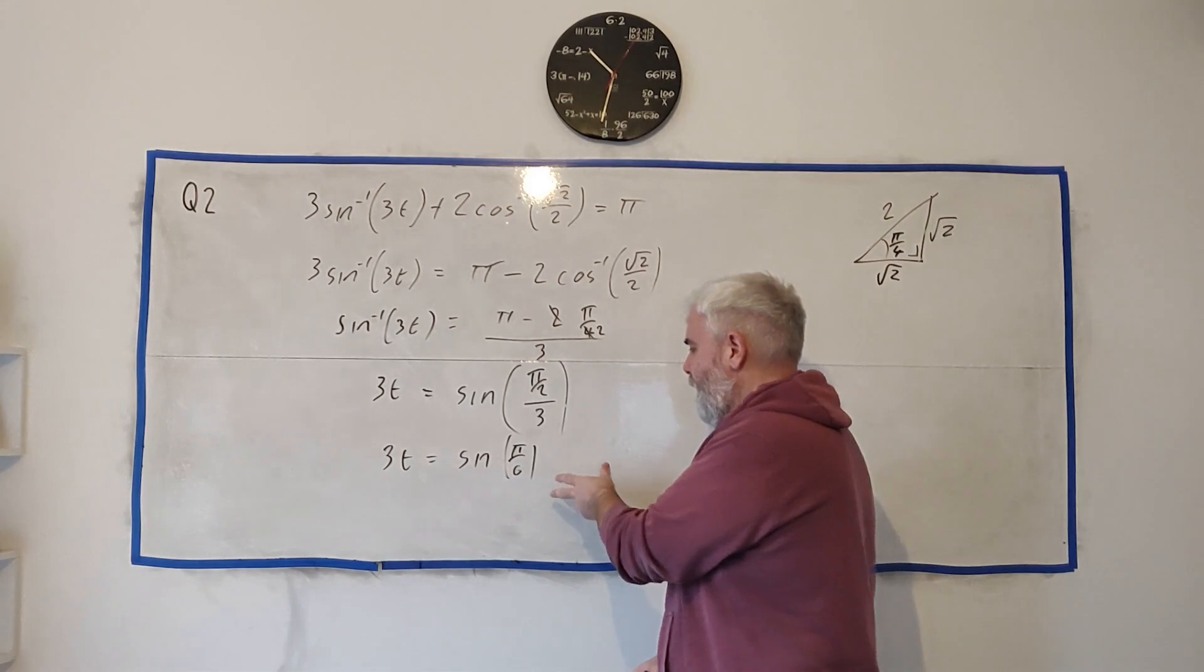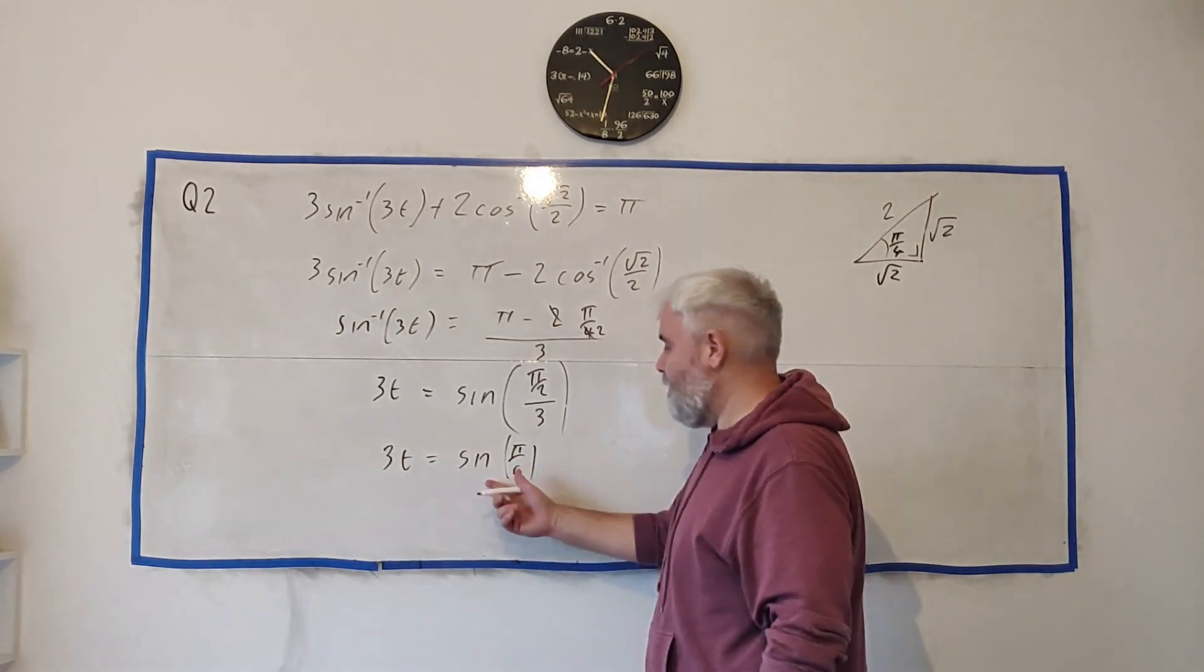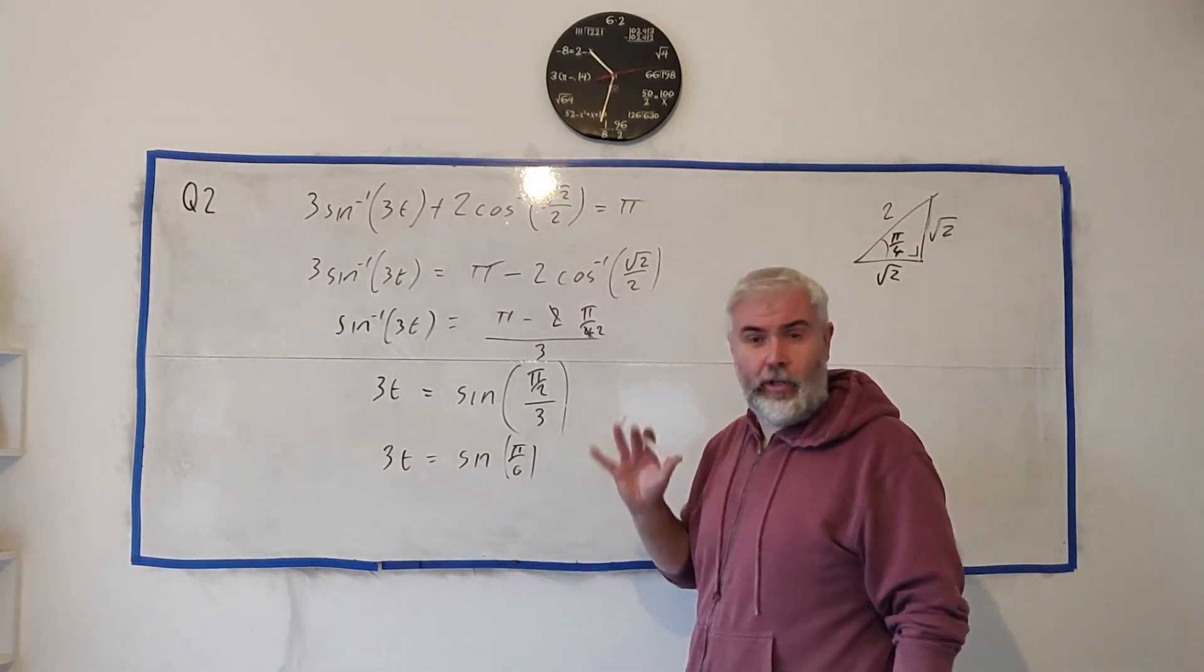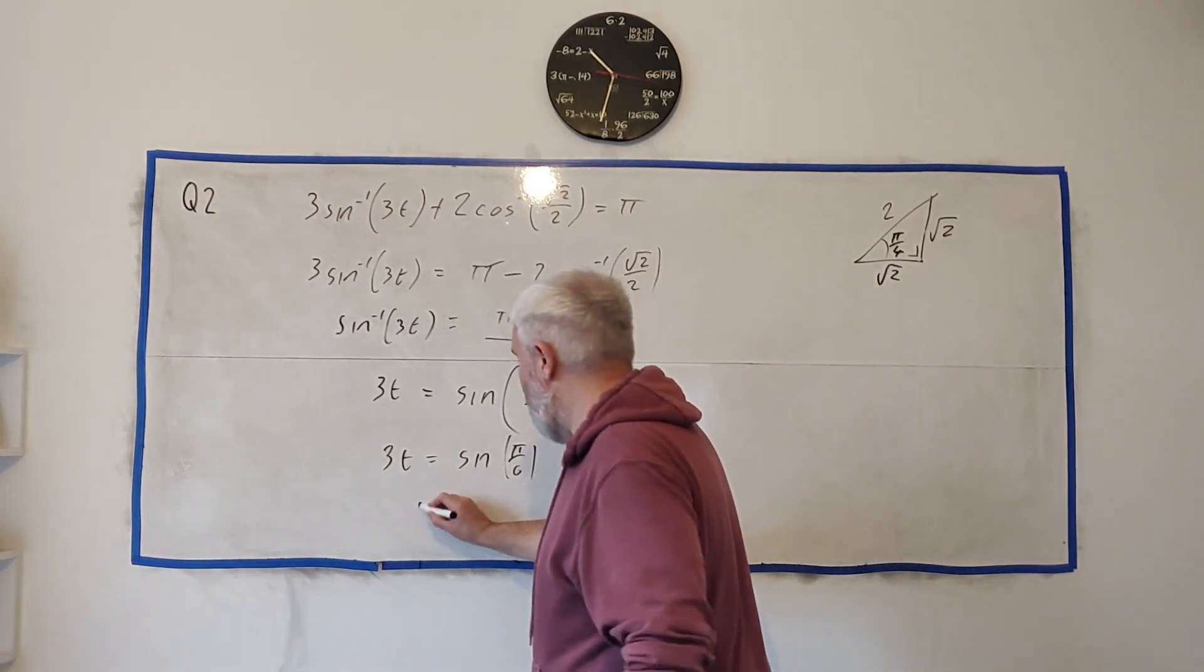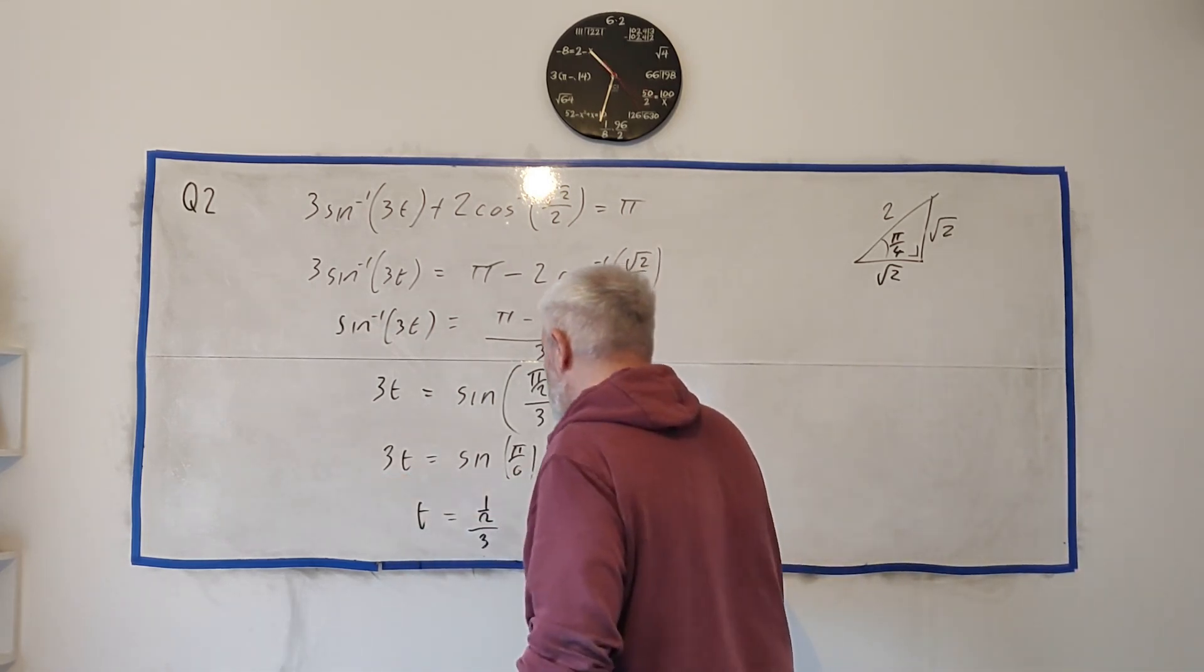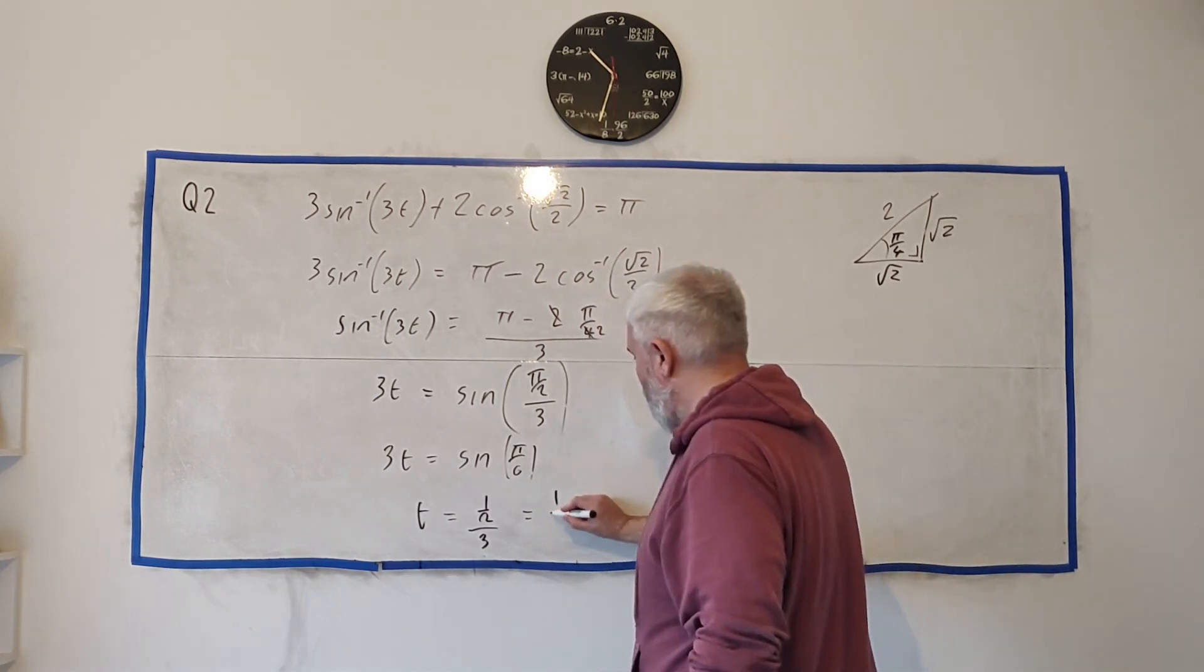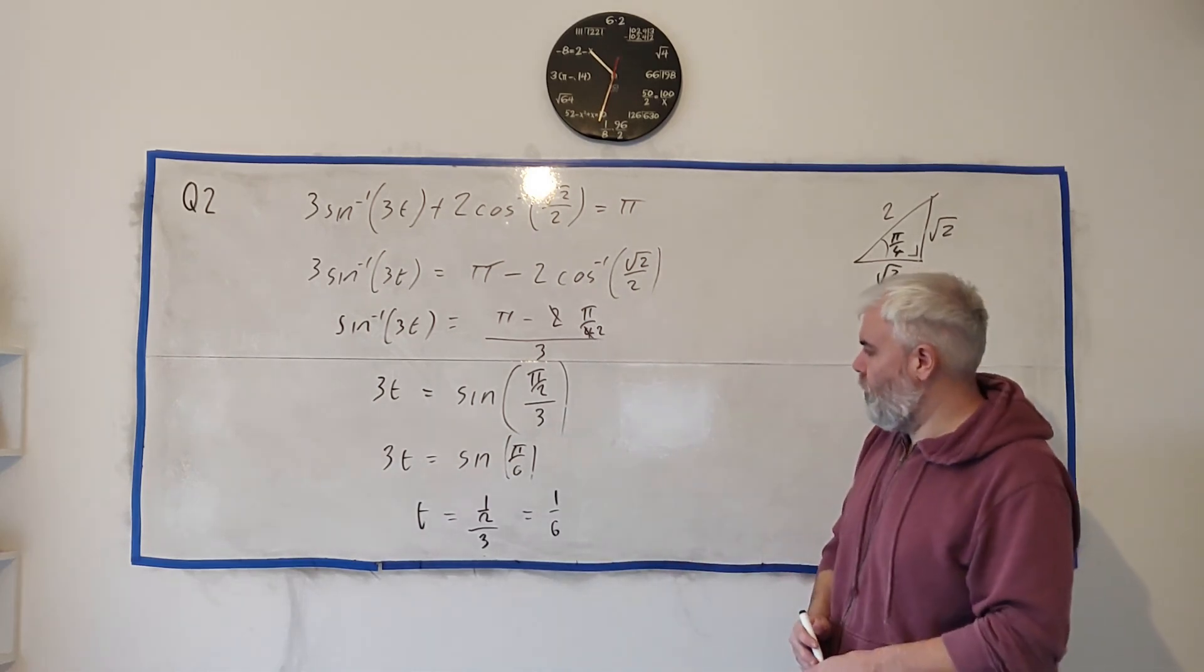So let me write that. 3t is equal to sine π over 6, and π over 6, again, can be done in our head. It's a famous one. π over 6 is like 30 degrees. Sine of 30 degrees is a half. Again, you can do a triangle and work that out yourself with Pythagoras theorem, but for now we'll use a calculator, and we'll say this is equal to a half divided by this tree, divided by 3, which is equal to 1 over 6. And that's it for question 2.